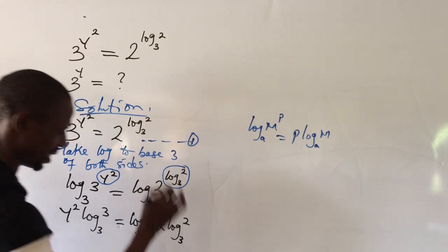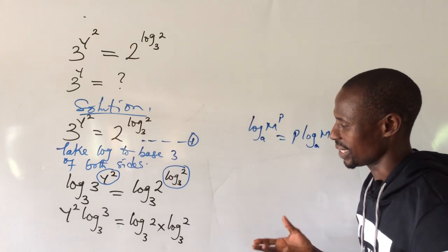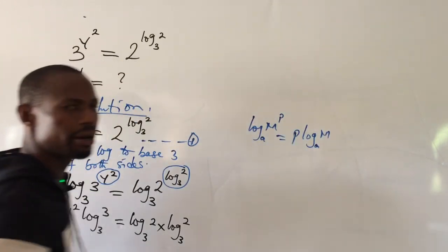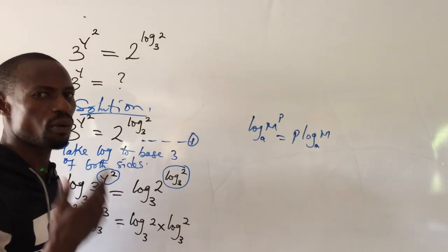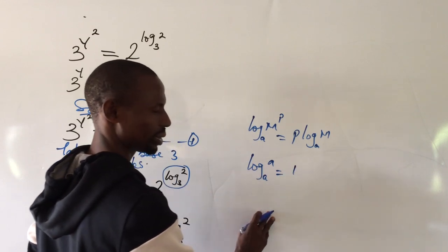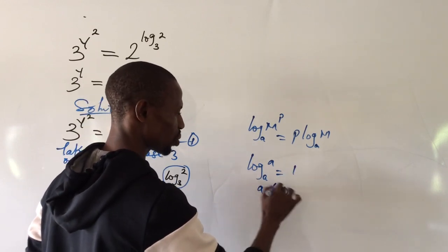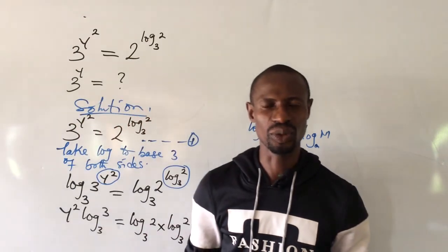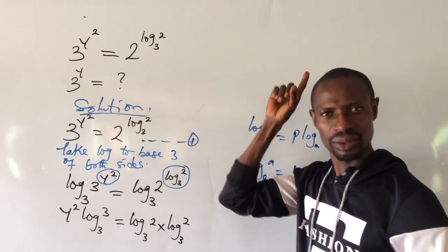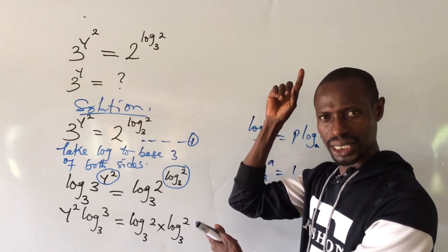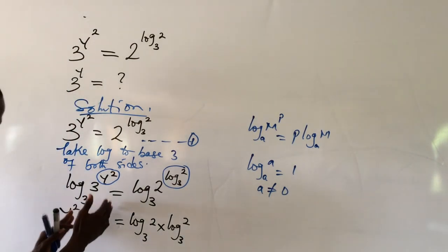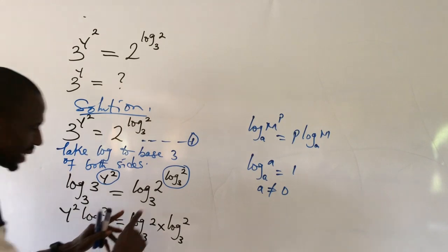From here we are having log 3 base 3, and the log of any number to its own base is 1. In other words, the law says: log a base a equals 1, provided a is not equal to zero. I produced a video on the major nine laws of logarithms — you can watch that later. So the rule here gives us 1.